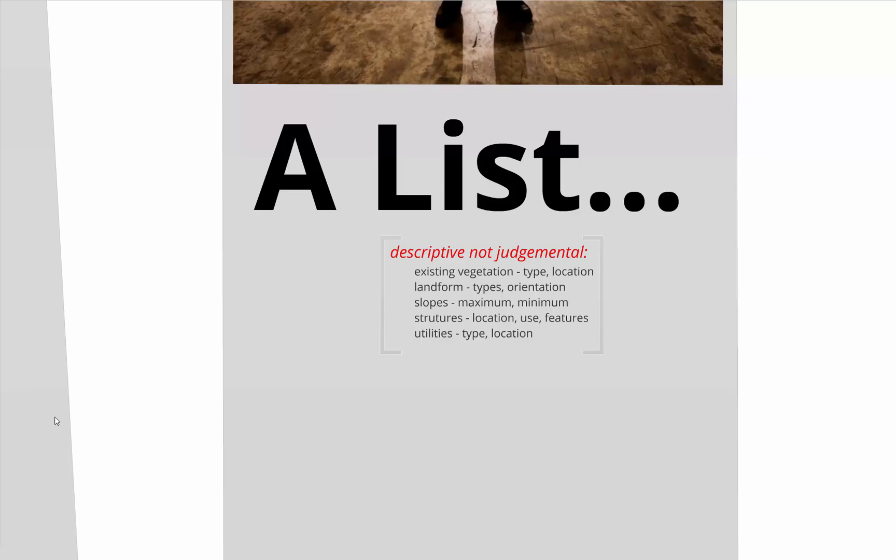Let's take a look at site inventory. We start with a blank slate — a quad with three buildings around it and a parking lot on one end. An inventory is really just a list; it's descriptive, not judgmental. We locate existing vegetation, what type it is, what condition it's in, landforms. Even a fairly flat site — as I discovered with some ice out there — a little bit of slope makes a difference in terms of how your feet hit the ground.